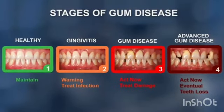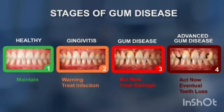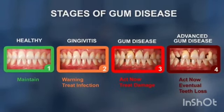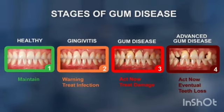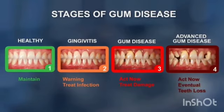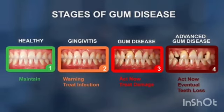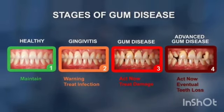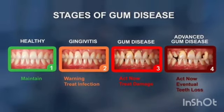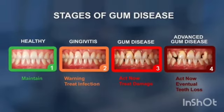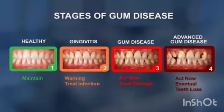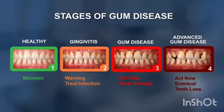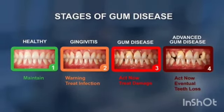In advanced gum disease, scaling, root planing, and local antibiotics are used, along with regenerative procedures for teeth that cannot be saved. The take-home message is that we have to maintain proper oral hygiene — elimination of bacterial plaque accumulation is very important. Thanks for watching.